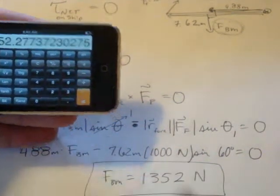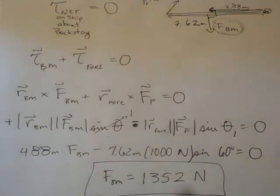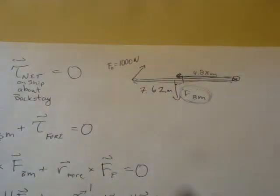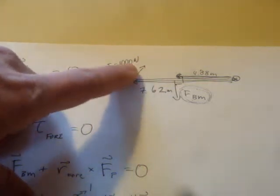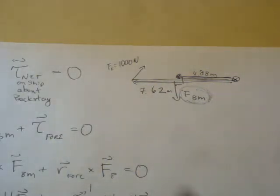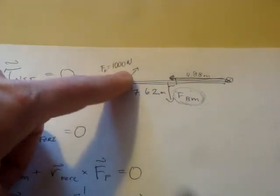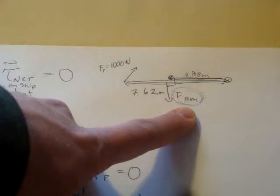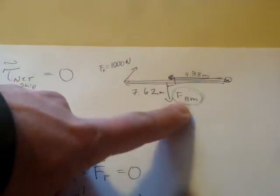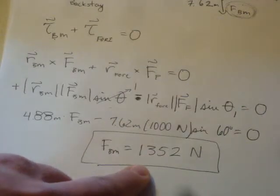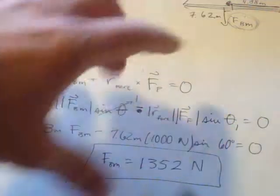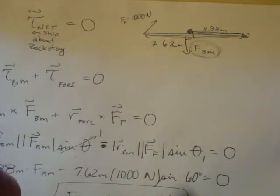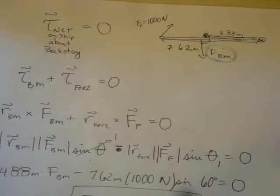That might seem like a really large force. Does that make sense? It's extremely large compared to the backstay force, but let's check. We had 1,000 newtons acting at a lever arm of 7.62 meters, considerably larger than 4.88 meters. Would you expect this force to be greater than, less than, or equal to 1,000 newtons, based on the fact that torques need to be equal? This needs to be larger than 1,000 newtons, and in fact it is - 1,352 newtons. Intuitively this makes sense. By Newton's third law, if this is the force on the boat by the mast, that equals the force on the mast by the boat. Hopefully this is useful.